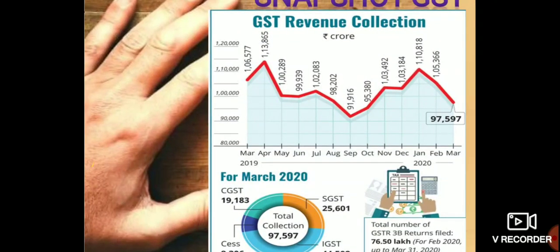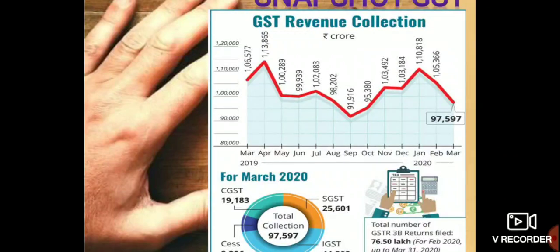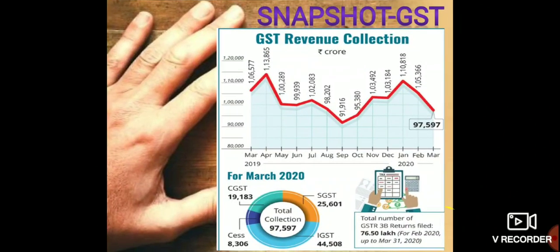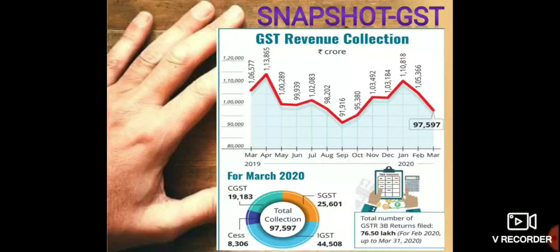Out of this ninety-seven thousand five hundred and ninety-seven crore of GST revenue collection: nineteen thousand one hundred and eighty-three crore would be collected through CGST (Central Goods and Service Tax); twenty-five thousand six hundred and one crore through SGST (State Goods and Service Tax); forty-four thousand five hundred and eight crore through IGST (Integrated Goods and Service Tax); and the remaining eight thousand three hundred and six crore through CESS. This is the total GST revenue collection for March 2020.